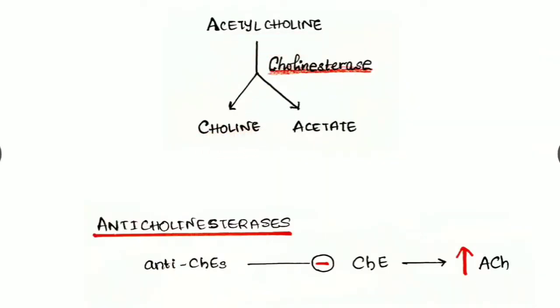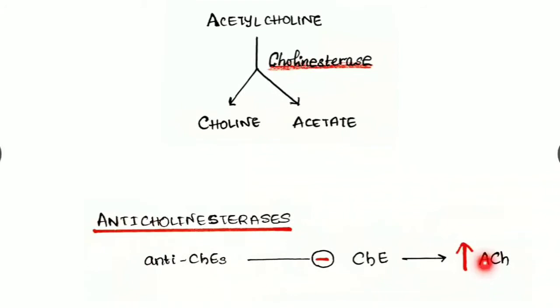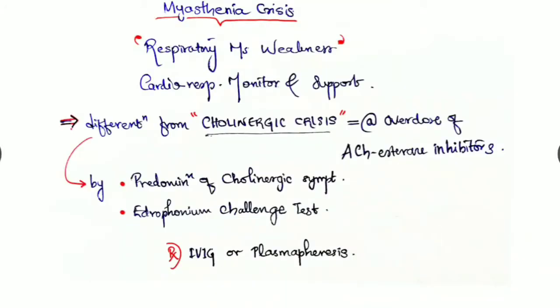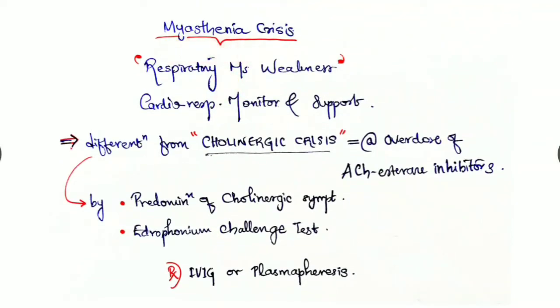Acetylcholine is broken down into choline and acetate by cholinesterase enzyme. Anticholinesterases inhibit this enzyme and prevent breakdown of acetylcholine, increasing its concentration. This is what we see in cholinergic crisis, which is opposite to myasthenia but has similar respiratory effects.